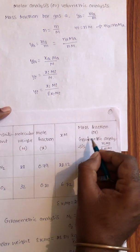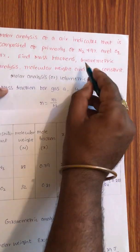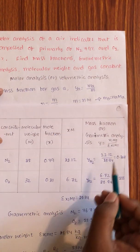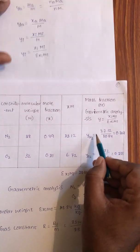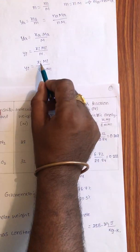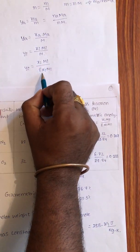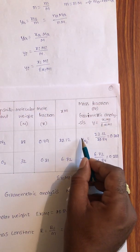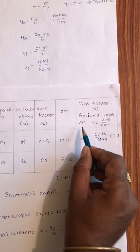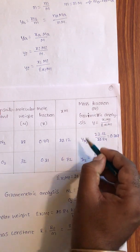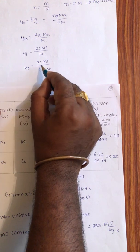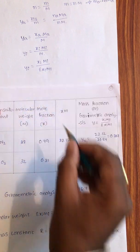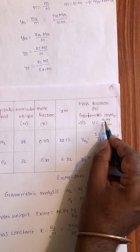Now mass fractions or gravimetric analysis. Gravimetric analysis means mass fractions. Mass fraction Y is equal to Xi Mi by series of Xi Mi. So mass fraction for nitrogen, YN2 equal to XN2 into MN2 by series of Xi Mi.